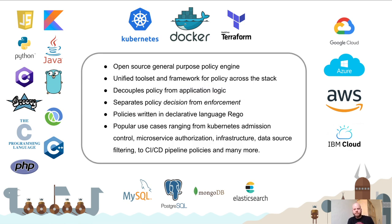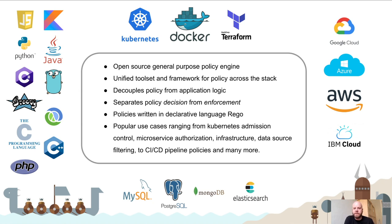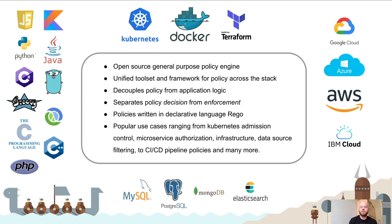OPA is an open source, general purpose policy engine. General purpose — it kind of has to be in order to fulfill this promise of unifying policy enforcement across this diverse set of technologies and products. OPA offers a unified toolset and framework for working with policy across the whole stack, and it decouples policy from application logic, much like you'd extract data management to a database.